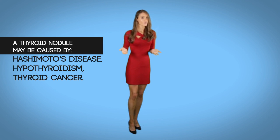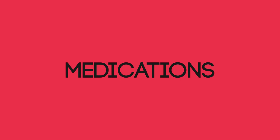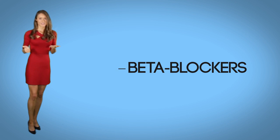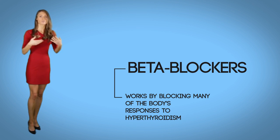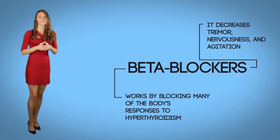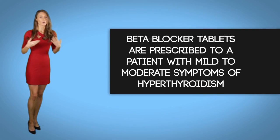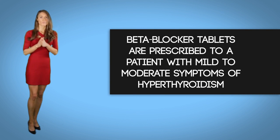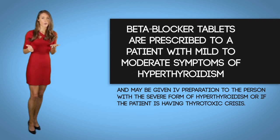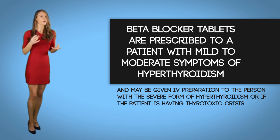A thyroid nodule may be caused by Hashimoto's disease, hypothyroidism, or thyroid cancer. Medications for hyperthyroidism include beta blockers. This class of medications works by blocking many of the body's responses to hyperthyroidism — it can decrease tremor, nervousness, and agitation, and also reduce fast heart rate. Beta blocker tablets are prescribed for mild to moderate hyperthyroidism and may be given IV to patients with severe hyperthyroidism.